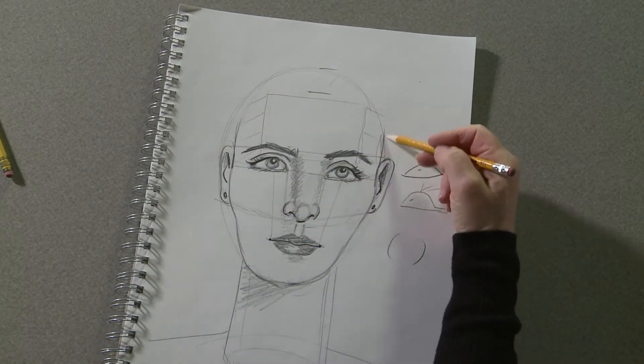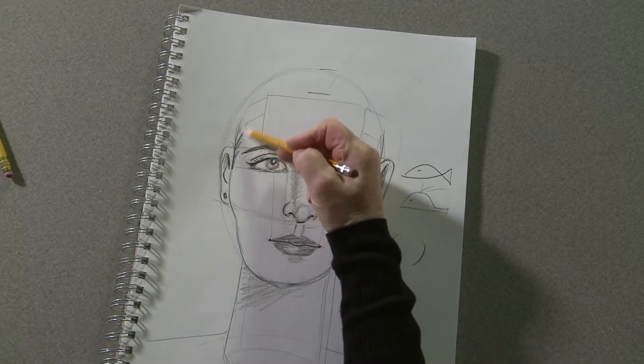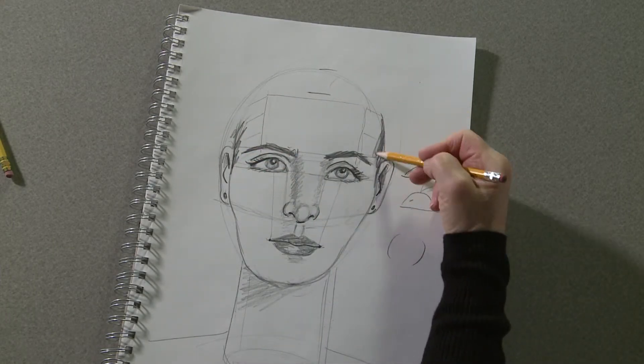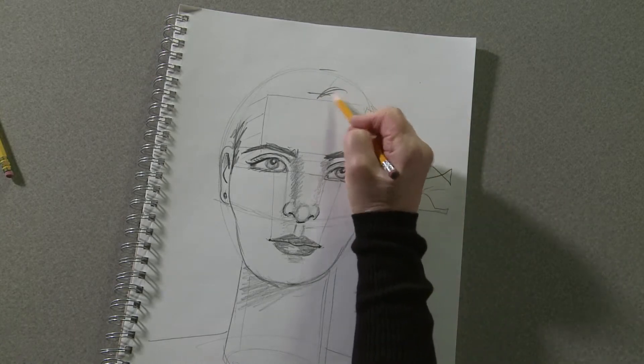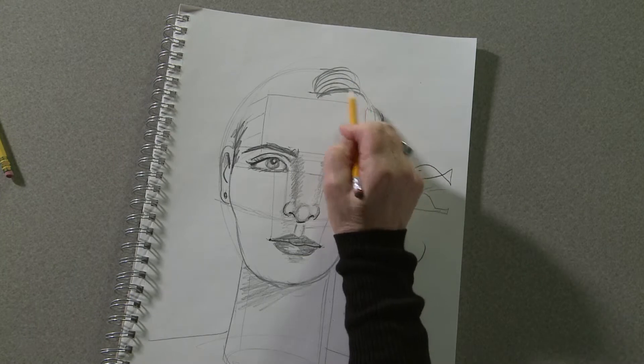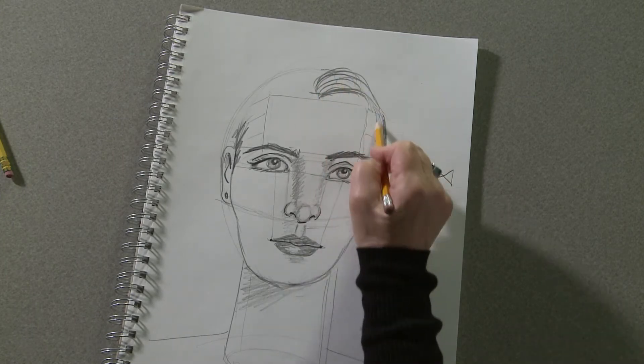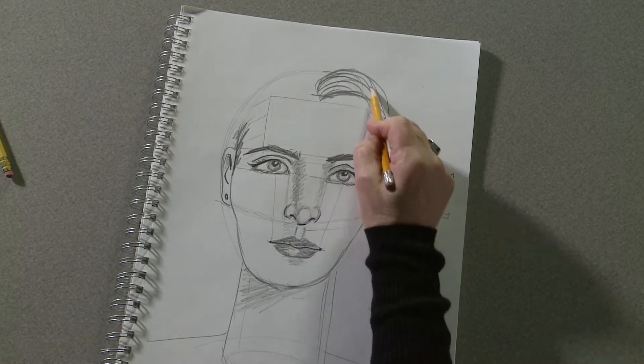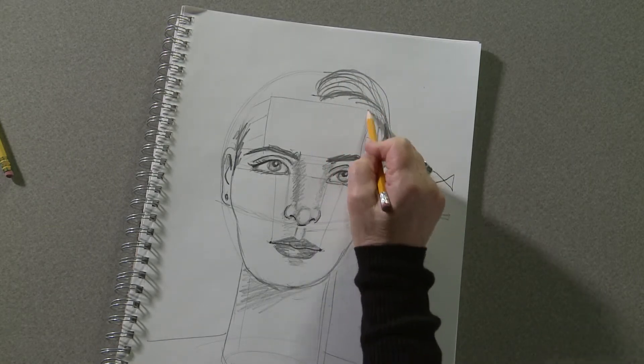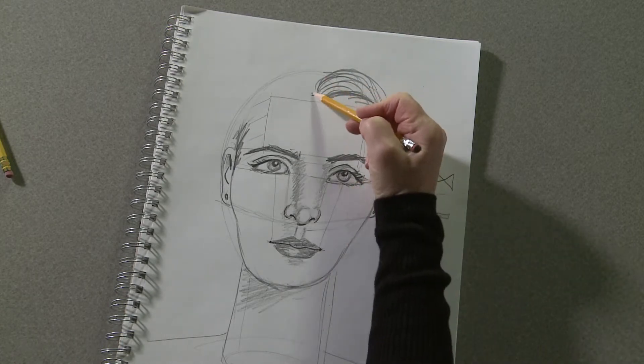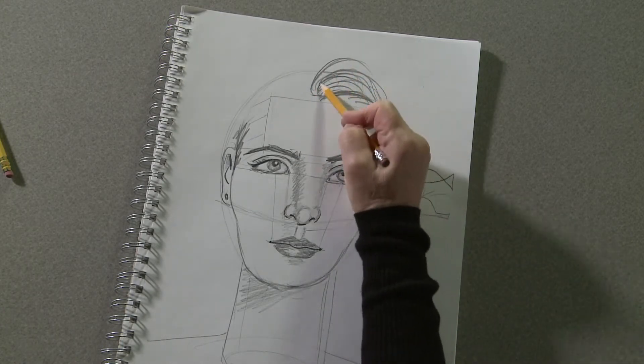And then we'll move on to the hair at the temples and the hairline. Hair grows up and out from your scalp. So you don't want to have the hair look like it's painted on her head. You want it to puff up and then down. If she had short hair, it might just do this.